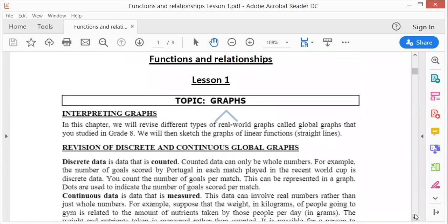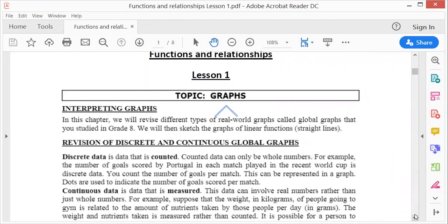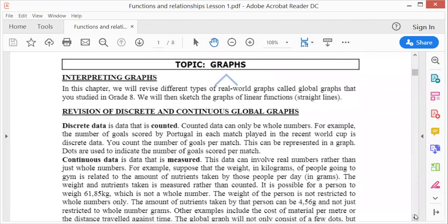Let's start with functions and relationships and graphs. Lesson one: graphs, interpreting graphs. In this chapter we'll revise different types of real world graphs, called global graphs. You've done some in grade 8. We'll then sketch graphs of linear functions, which means straight lines.